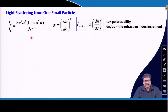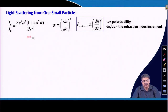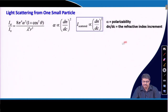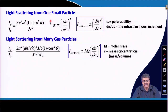If you recall, in the last lecture I had discussed light scattering from one small particle, and this was the expression where alpha is the polarizability, which is related to dn/dc squared, where dn/dc is the refractive index increment. Next I moved on to a collection of small gaseous particles, and for light scattering from many gas particles we got this expression where m is the molar mass or molecular weight and c is the mass concentration in terms of mass by volume.